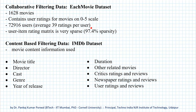The second data source is the IMDB dataset, which contains content-based filtering data. That means it contains descriptions of movies, and the description includes movie title, director, cast, genre, year of release, duration, other related movies, and ratings and reviews by critics, newspapers, and users.